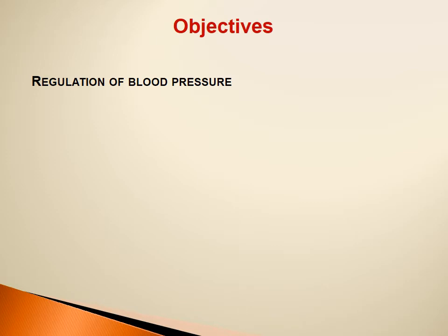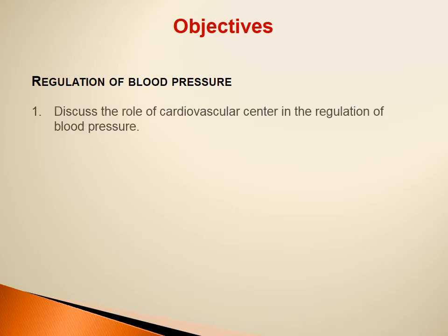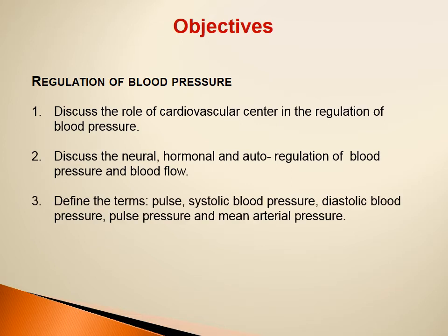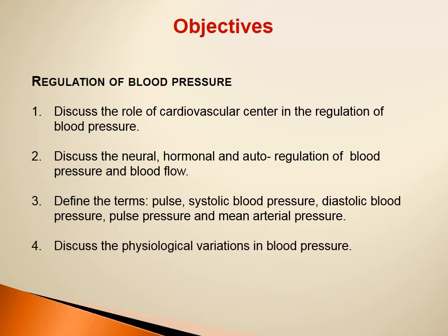The objectives of this lecture are to discuss the role of the cardiovascular center in the regulation of blood pressure, discuss the neural, hormonal, and autoregulation of blood pressure and blood flow, define the terms pulse, systolic pressure, diastolic pressure, pulse pressure, and mean arterial pressure, and discuss the physiological variations in blood pressure.